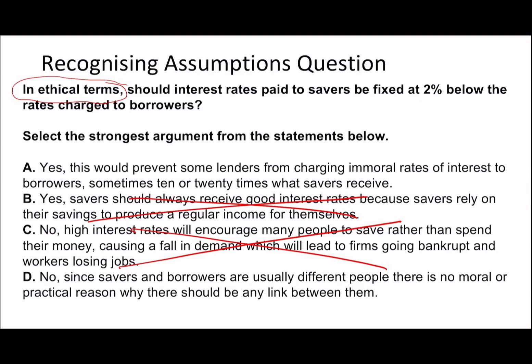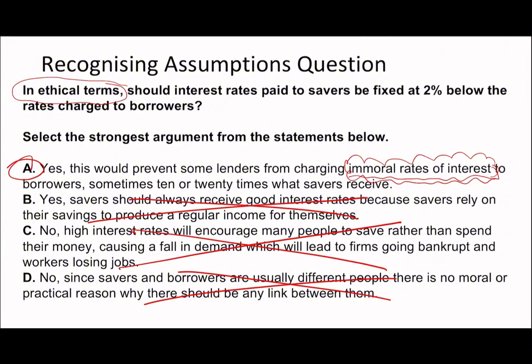Option D says since savers and borrowers are usually different people, there's no moral or practical reason why there should be any link between them — but that's a blanket statement that isn't necessarily always true. As I mentioned in one of my first recognizing assumption videos, these generic blanket statements are always going to be wrong. Going back to option A: it mentions 'immoral rates of interest,' which directly fits the ethical framing of the question. So A has to be the correct answer.